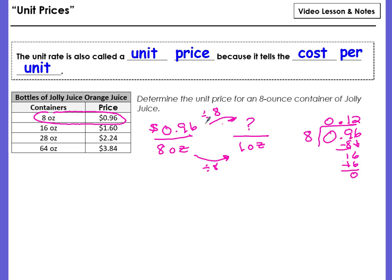So the cost of the Jolly Juice is going to be 12 cents per ounce. So it's the same thing as with unit rates. This just focuses more on money.